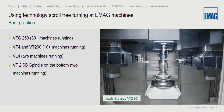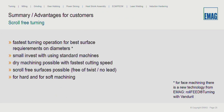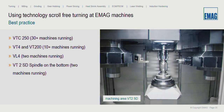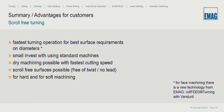As best practice, we have more than 30 machines running VTC 250 with this process. We also have the new machine VT2 SD and VL4 running with this process. The complete range of EMAC turning machine types can run this process. I hope I could show you that this process is one of the fastest turning operations for best surface requirements on diameters.